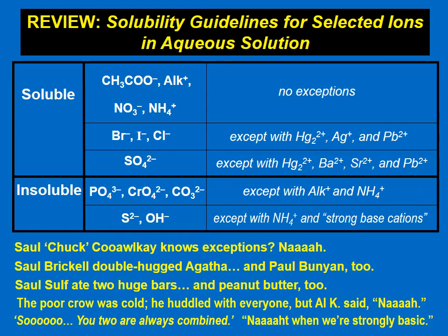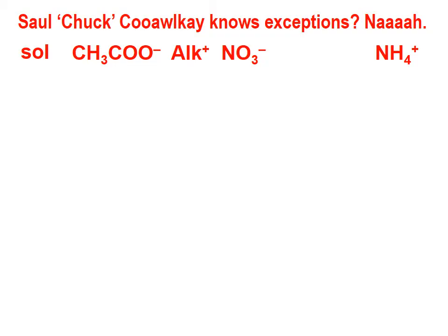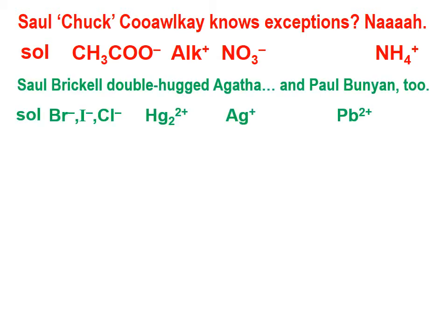Let's review those mnemonics on the next slide. The first mnemonic tells us that acetate ions, any alkali metal ion, any nitrate, and any ammonium ion — whenever you have a compound that has any of those ions, those compounds are soluble in aqueous solution. No exceptions.